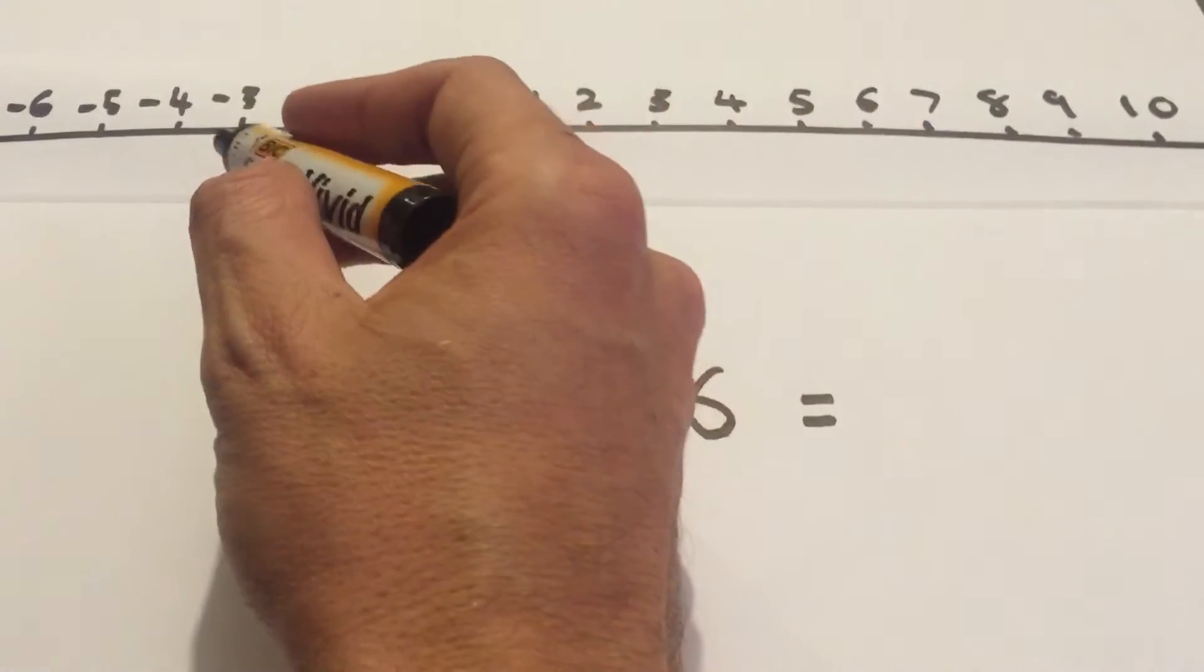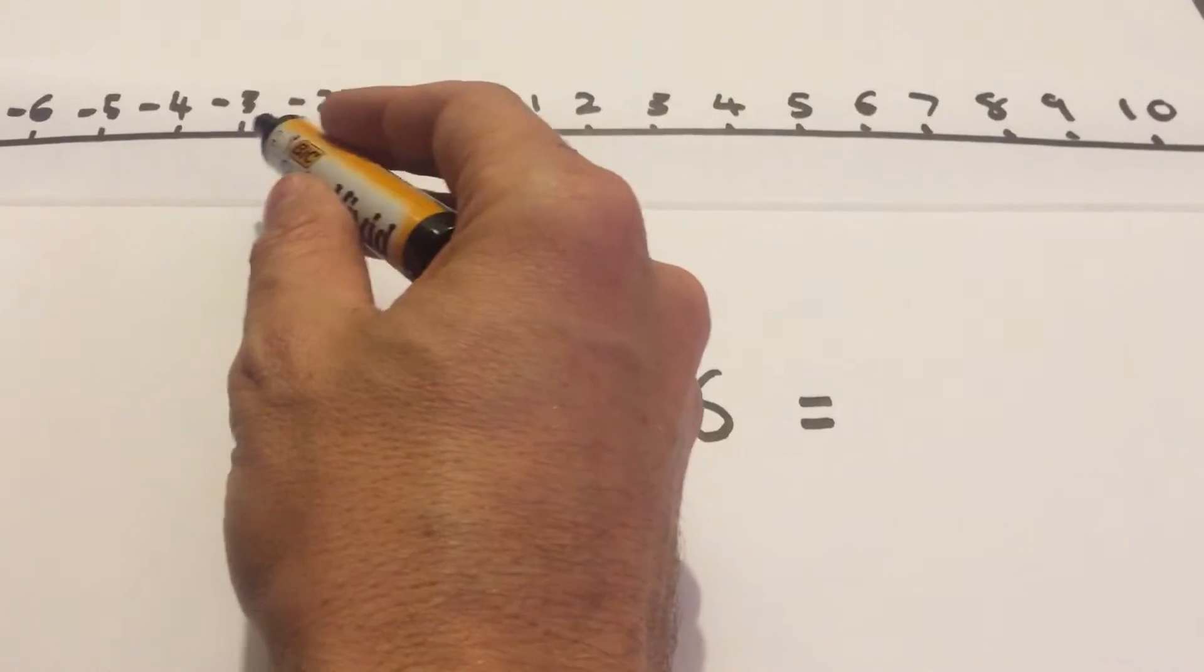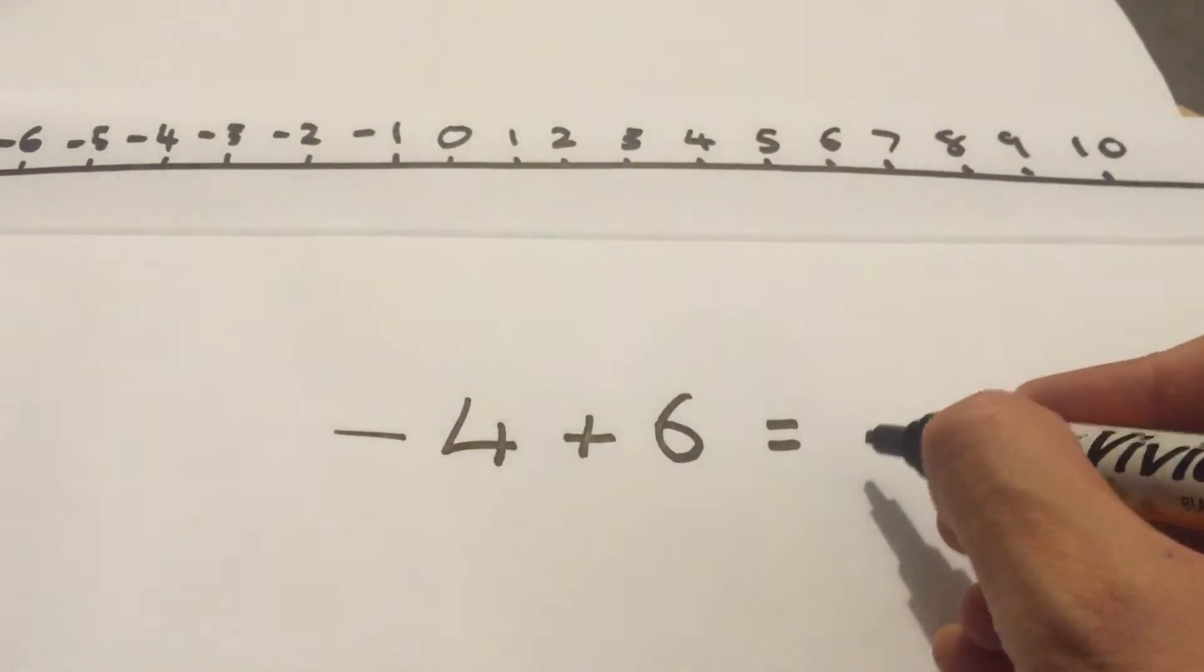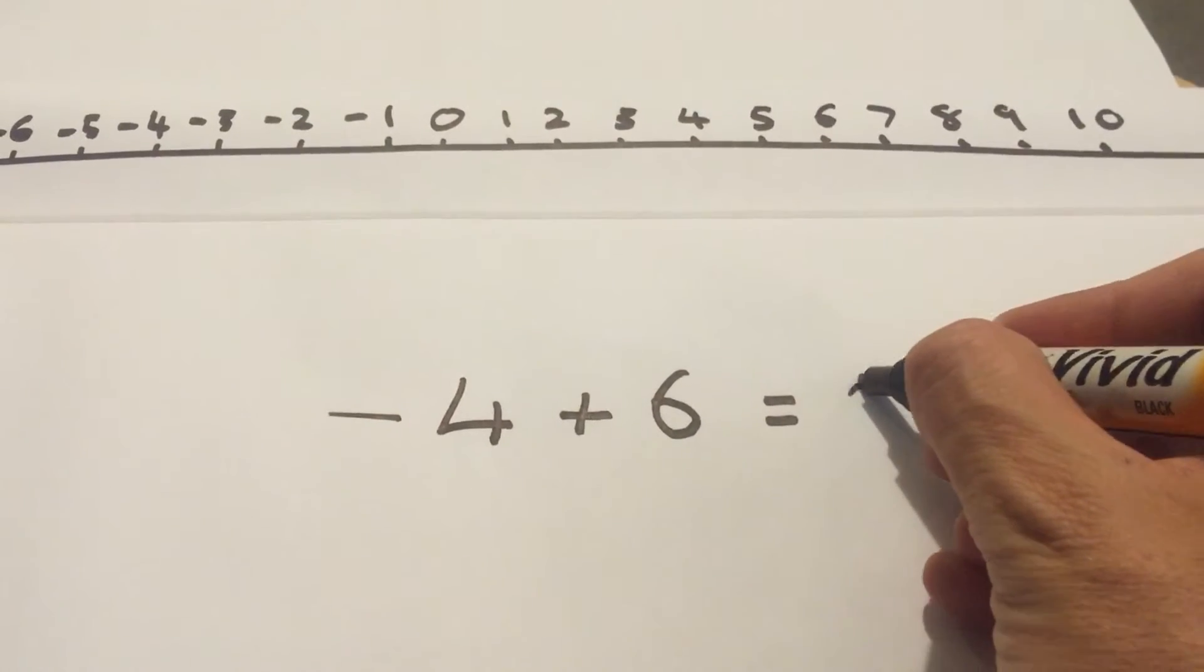Here's negative 4, remember it's 4 below 0, and add 6. 1, 2, 3, 4, 5, 6, answer is 2.